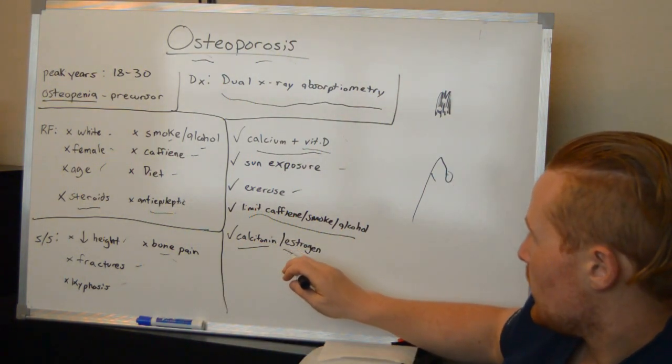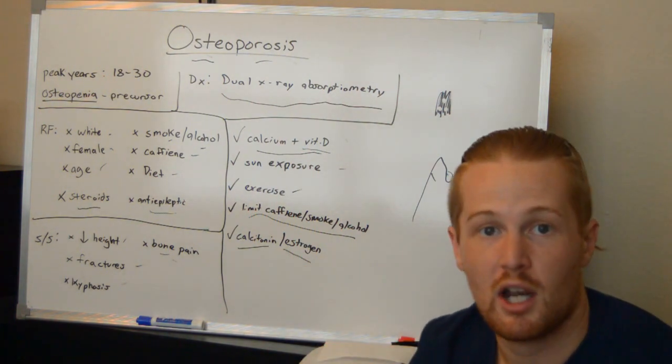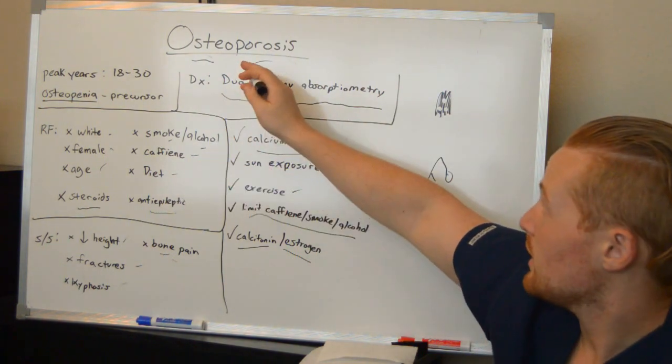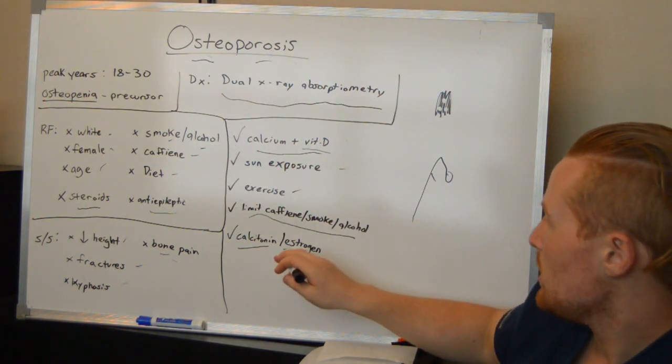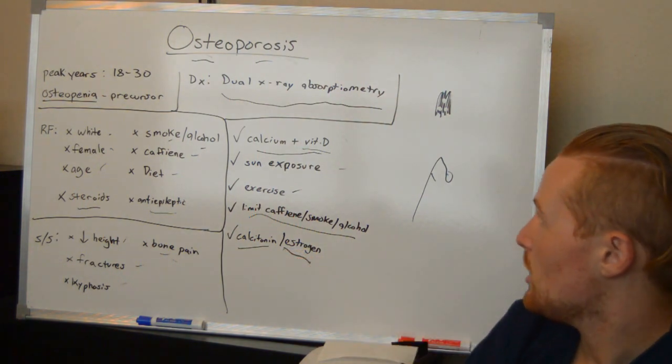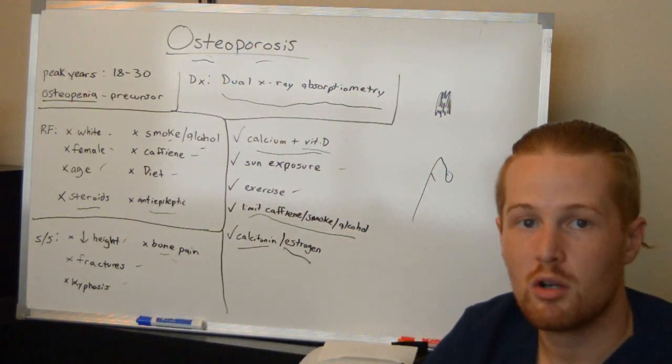And then for women they can get estrogen, and because when their estrogen level drops it also affects the hormones throughout the body to lead to osteoporosis. So for older women that are in menopause estrogen can help. So this is osteoporosis.